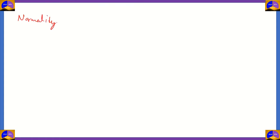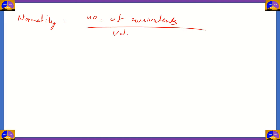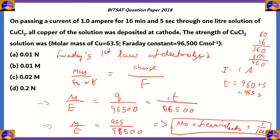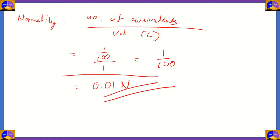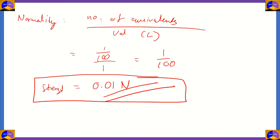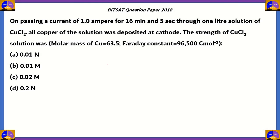Therefore, the normality of the CuCl₂ solution equals the number of equivalents divided by the volume of the solution in liters. The volume is 1 liter and the number of equivalents is 1/100. So 1/100 divided by 1 equals 0.01 normal. So 0.01 normal is the strength of the given solution of CuCl₂, and option A — 0.01 normal — is the correct answer.